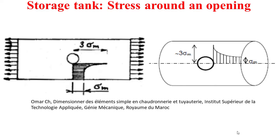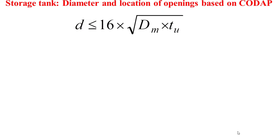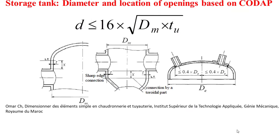It is important to note that the diameter of the opening should not exceed a maximum value equal to 16 times the square root of the mean diameter of the shell or formed head multiplied by the useful thickness of the considered shell or formed head. The mean diameter is the internal diameter plus the thickness, or the external diameter minus the thickness.